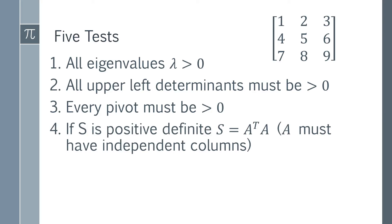The fourth test is to think about it in terms of the expression: a matrix S will be positive definite if S can be written as A transpose times A — that's the definition of a symmetric matrix — but you also need the further condition that A must have independent columns. Otherwise you get a special case that is not positive definite.